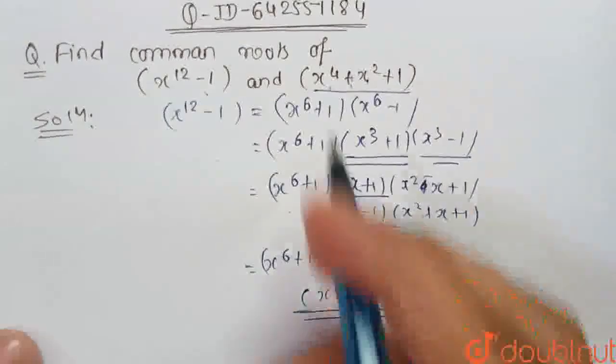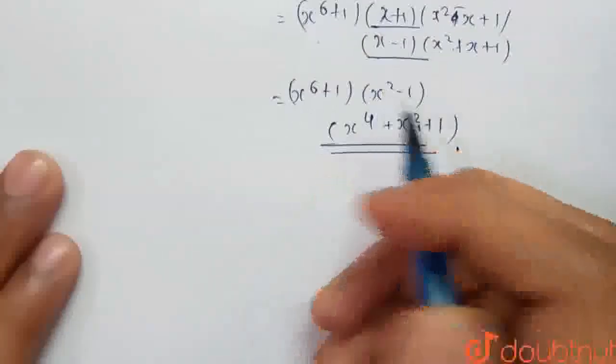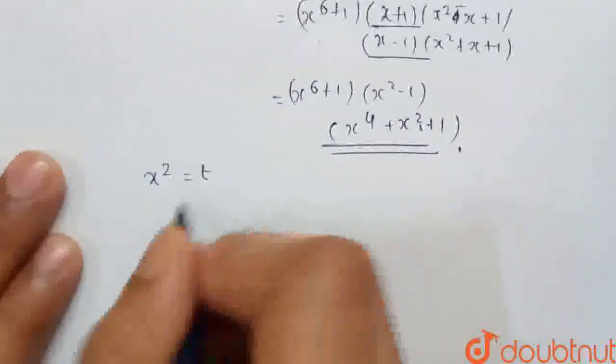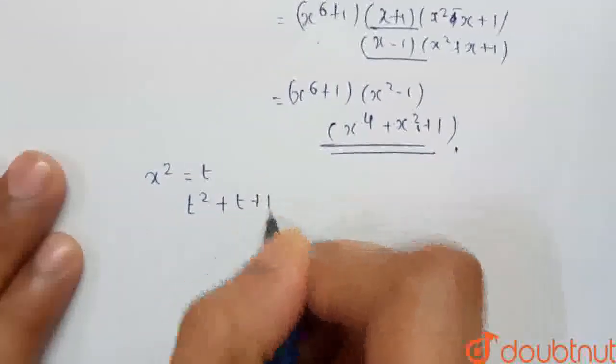Now we will solve this equation. So we let x^2 equals to t. So we will get t^2 + t + 1.